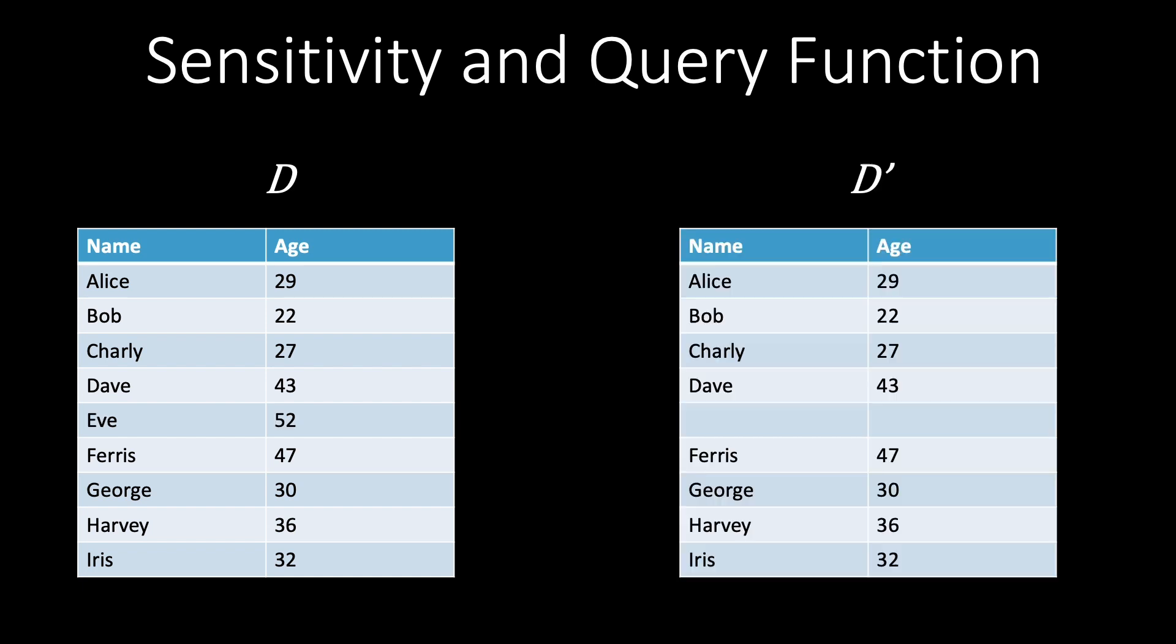To recap, depending on the query or function you're applying you have to calculate the maximum possible change that occurs by removing any item in a data set. And then you remove the one that actually produces the maximum change. In this case selecting Eve results in the highest change and D prime is D without Eve.